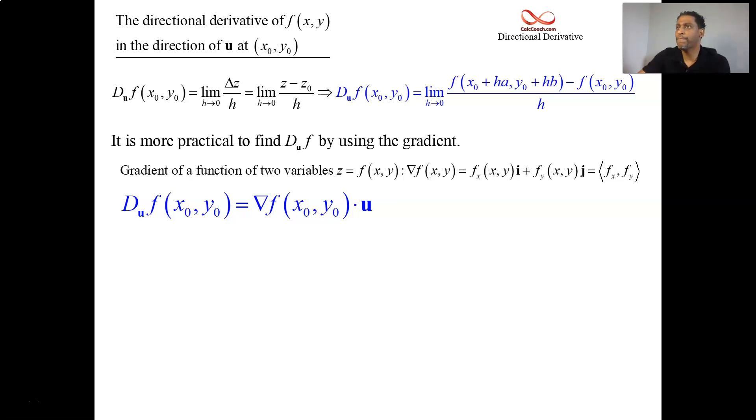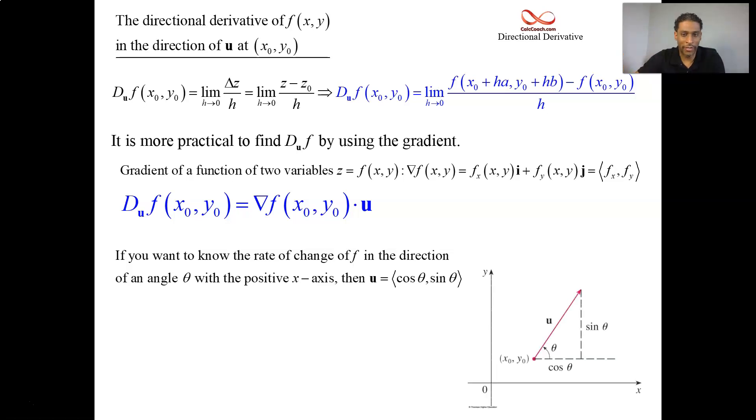If you have an angle, you can always create a unit vector with that angle because cosine theta could be your i component and sine theta could be your j component. And you'll automatically then, because of cosine squared plus sine squared, you'll have for sure a unit vector. And so you could then just dot with that to calculate your directional derivative.